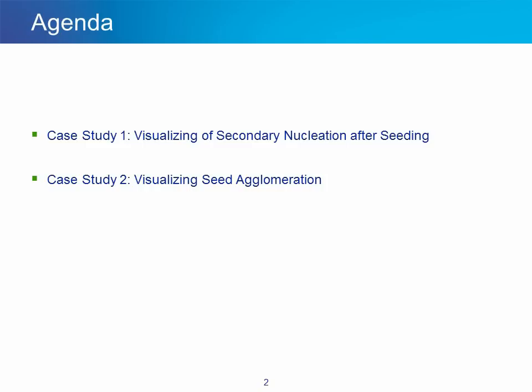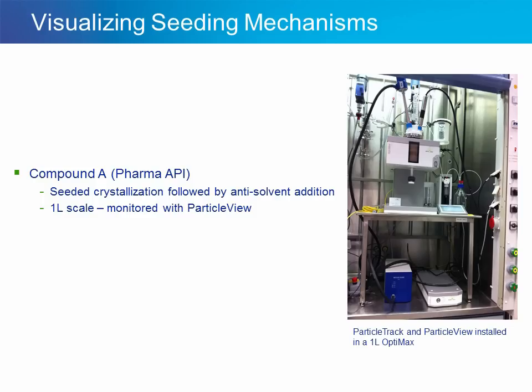In the first case study, we'll look at how secondary nucleation can occur during seeding, and in the second case study, we'll look at seed crystals agglomerating and the impact that can have on the process.